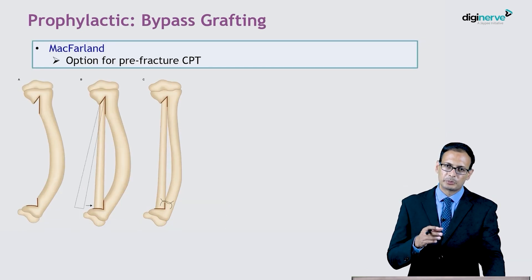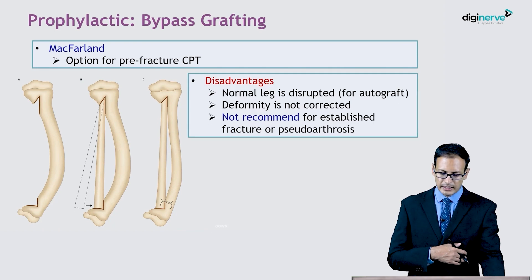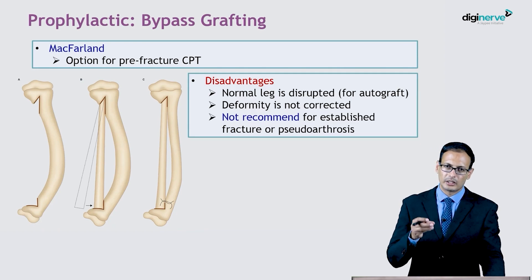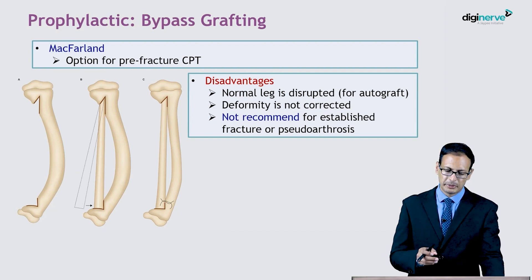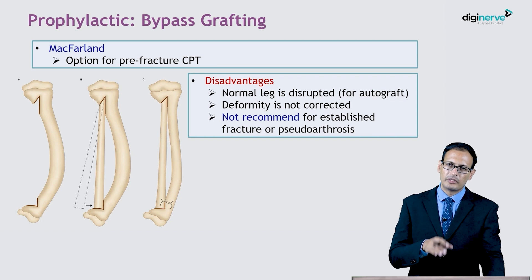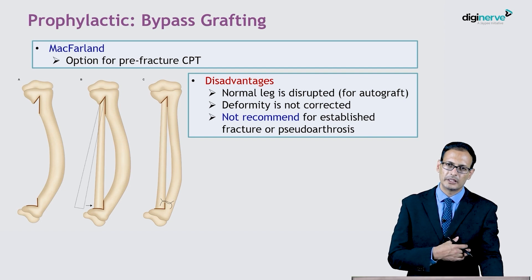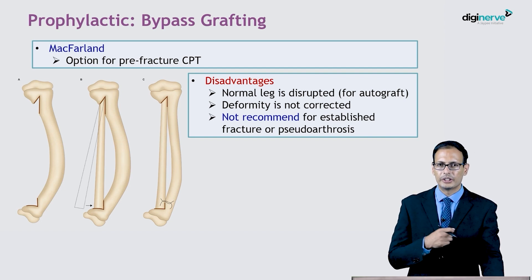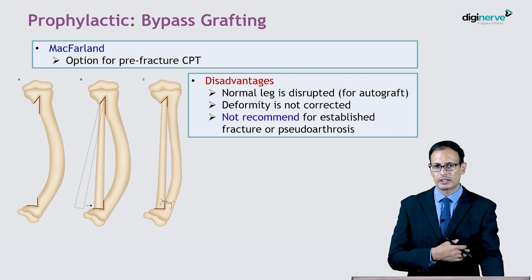McFarlane type of bypass bone grafting can often be used in pre-fracture CPT. A disadvantage is that the normal leg is disrupted to harvest a large amount of bone graft, and the deformity is not corrected. Remember, this is just bypass grafting to prevent the fracture from happening. It is not recommended for established pseudoarthrosis and these days carries more historical value.